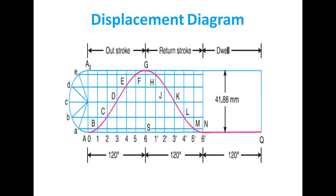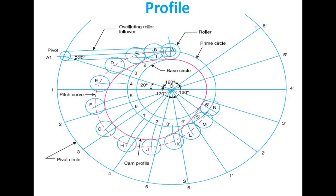The final stage is to draw the profile of the cam. First, draw the base circle. The base circle is the cam, and its radius is given as 40 mm. The follower is an oscillating roller follower with a roller radius of 10 mm. Therefore, the distance from O to A1 equals 40 + 10 = 50 mm. Complete the base circle and then complete the prime circle, which passes through the center of the roller.